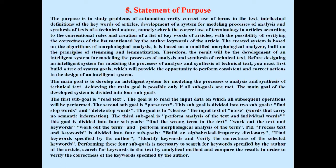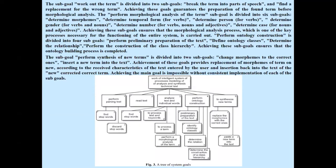The main goal is to develop an intelligent system for modeling the processes of analyzing and synthesis of technical text. Achieving the main goal is possible only if all sub-goals are met. The main goal of the developed system is divided into sub-goals. The first sub-goal is to parse text. The third sub-goal is to perform analysis of the text and individual words. Achievement of these goals provides replacement of morphemes and terms with new ones according to received characteristics and insertion back into the text of the new corrected term. Achieving the main goal is impossible without consistent implementation of each sub-goal.